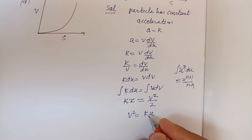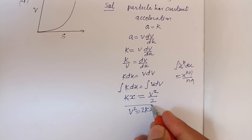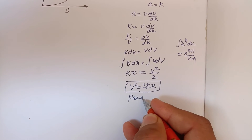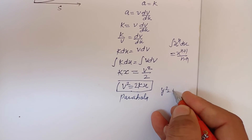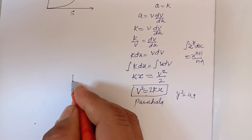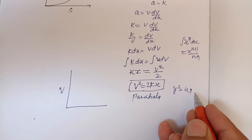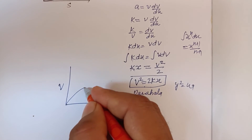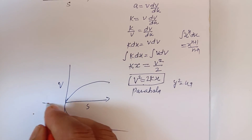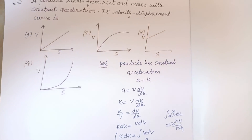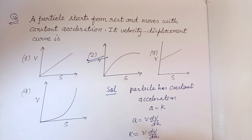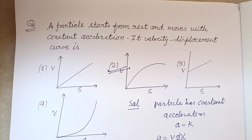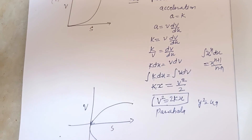From this we get v squared equal to kx, which is the equation of a parabola, like y squared equal to 4x. Here v is the y-axis and s is the x-axis. So the graph of v versus s is parabolic, and the answer to this question is the second option. I hope you got it — please like the video and subscribe to the channel. Thanks for watching.